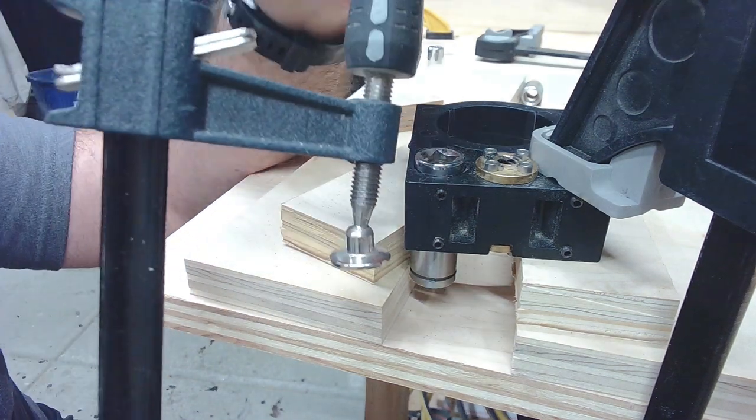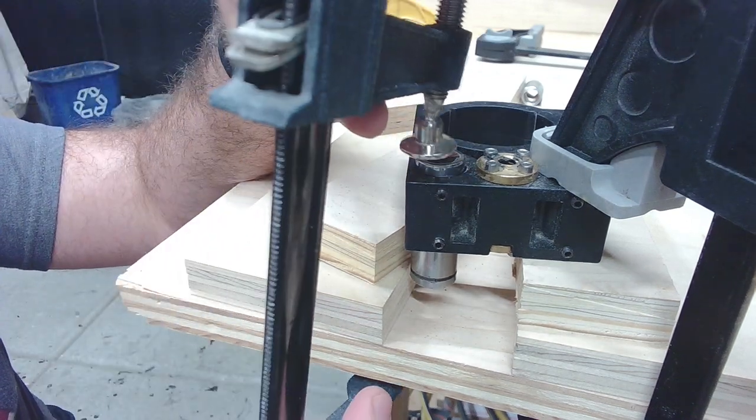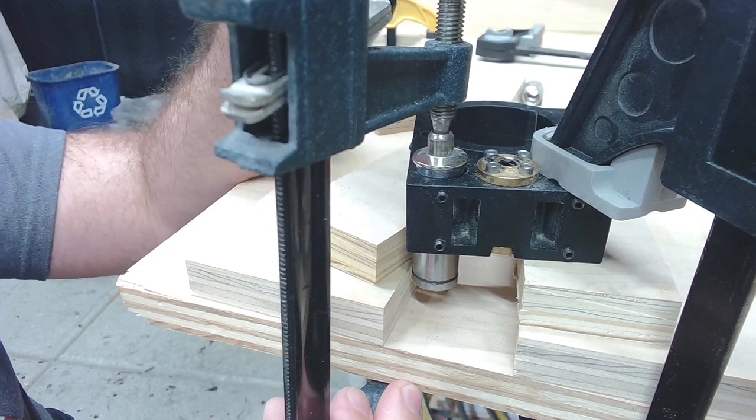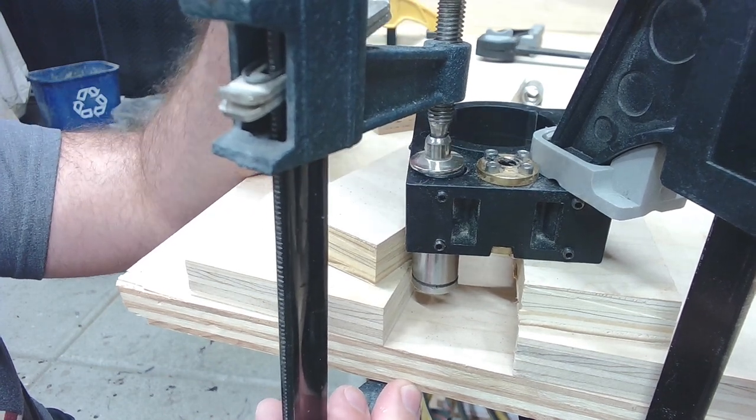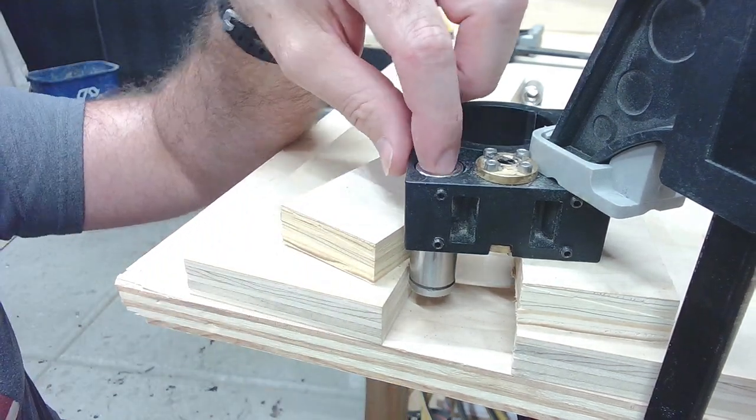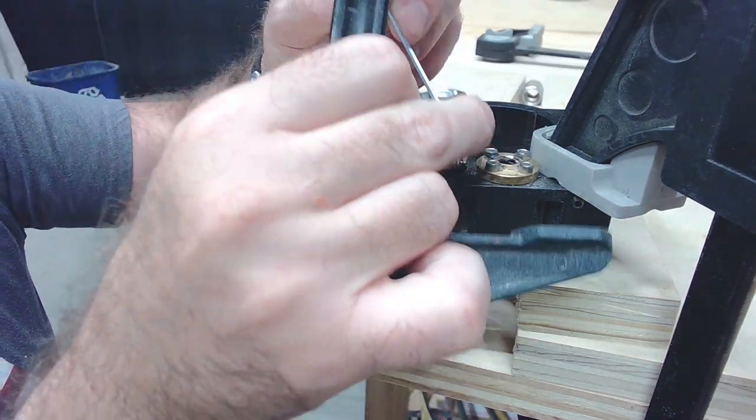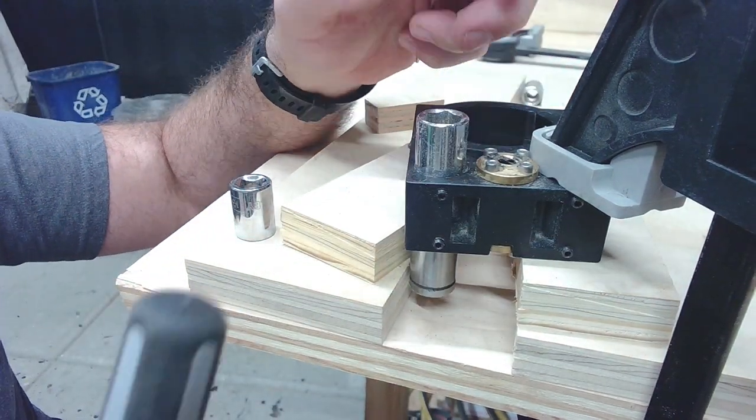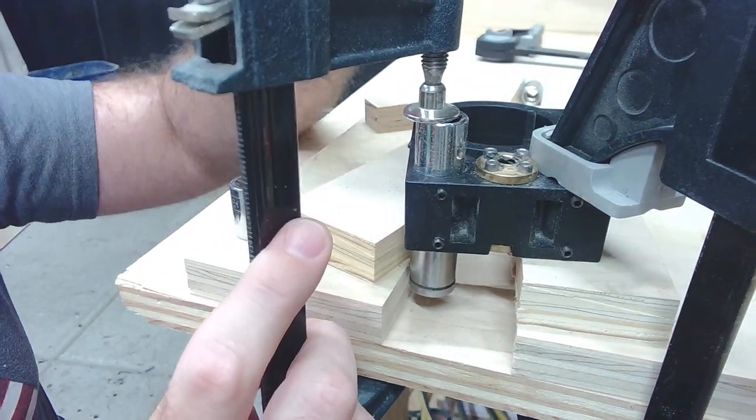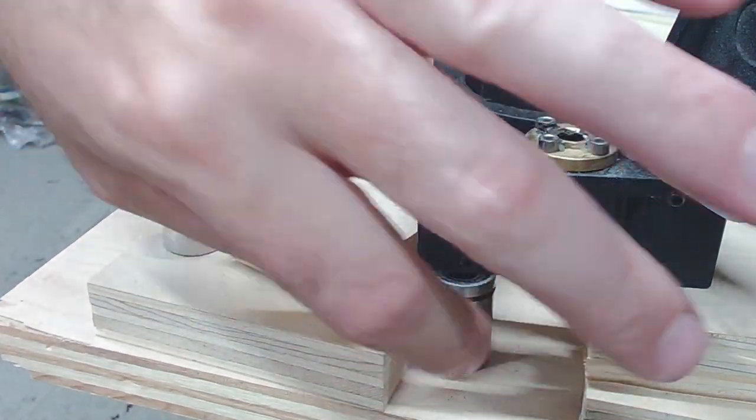I ran out of threads on this clamp. Let's go ahead and back this clamp off real quick, reposition, and keep on going. Put that deep socket in there. One more clamp. One more press with the deep socket, and it popped right out.